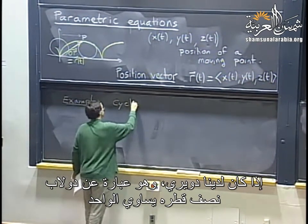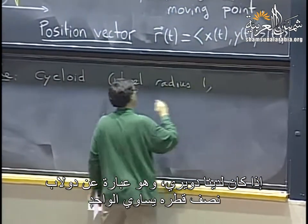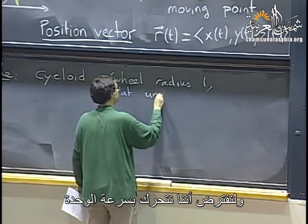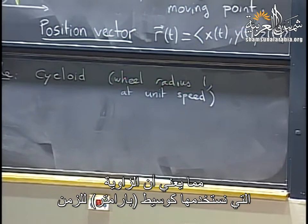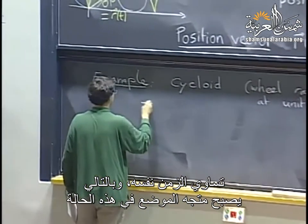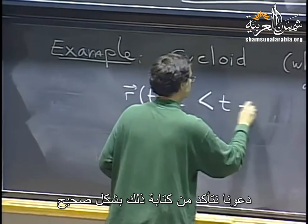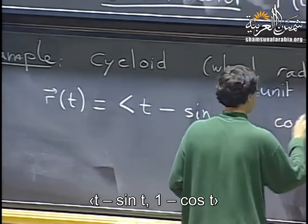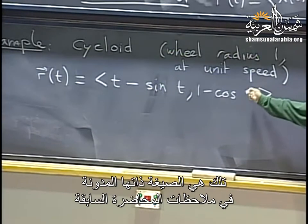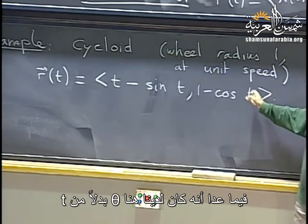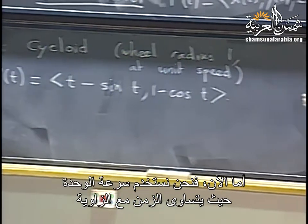For example, if I take the cycloid for a wheel of radius one, and let's say that we are going at unit speed so that the angle used as a parameter is the same thing as time, then the position vector in this case we found to be t minus sine t and 1 minus cosine t. That's a formula you should have in your notes from last time, except we had theta instead of t. But now we are moving at unit speed, so time and angle are the same thing.